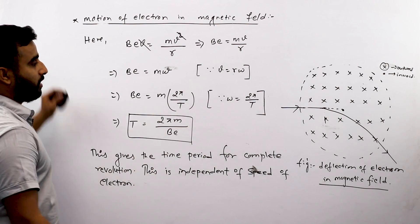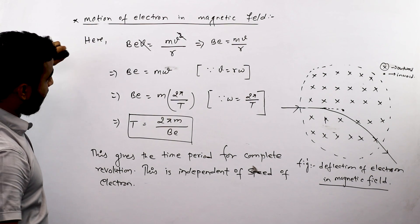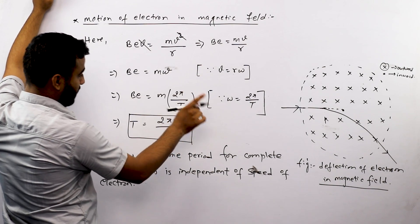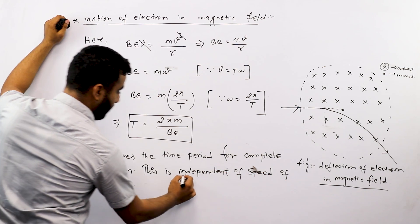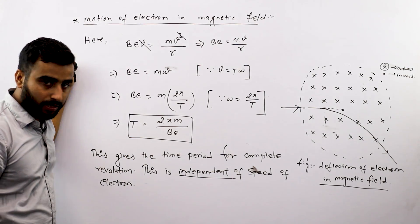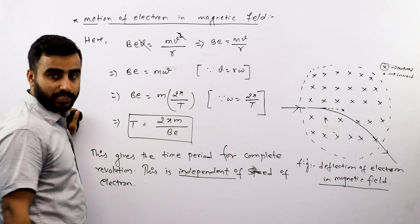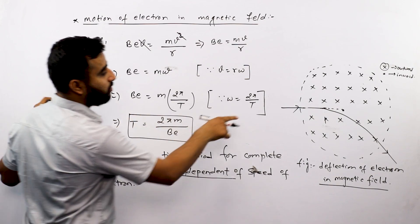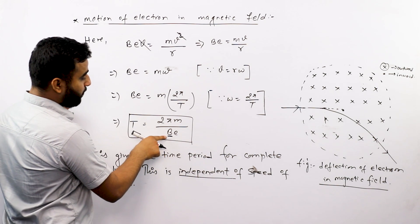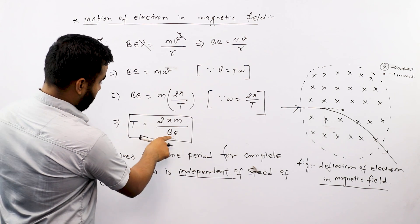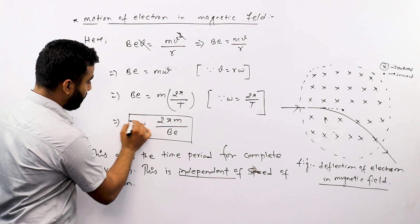This gives the time period for one complete revolution: T = 2πm/Be, where m is the mass of the electron and e is the charge, divided by the magnetic field B. This relation shows that the time period is independent of the speed or velocity of the electron. The time period depends only on the mass of the charge and the magnetic field B.